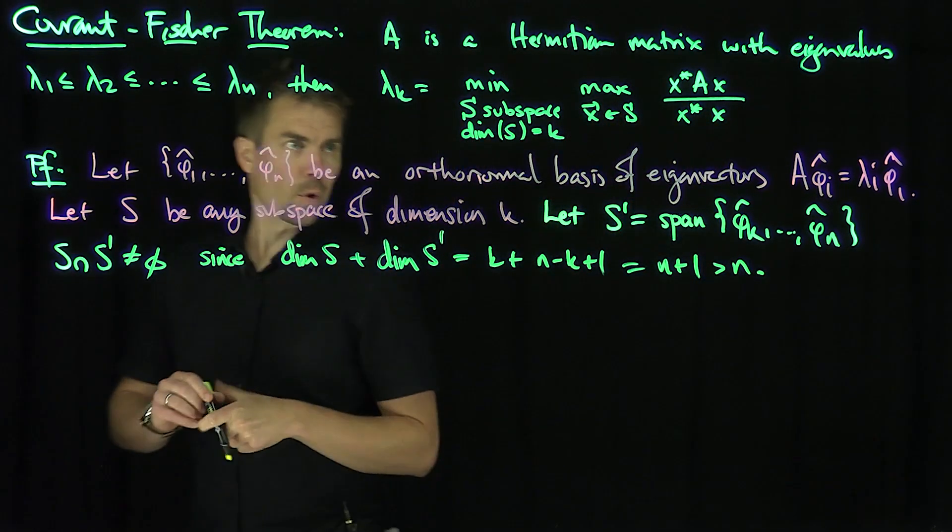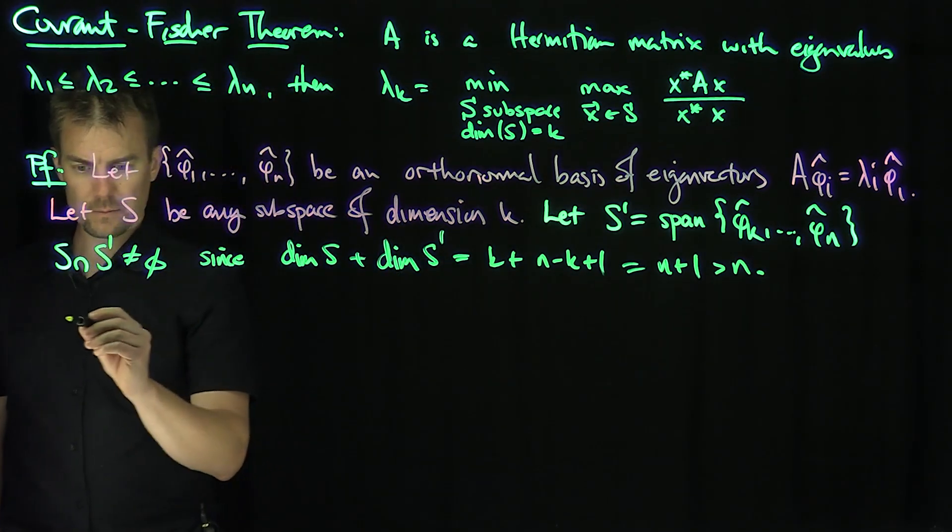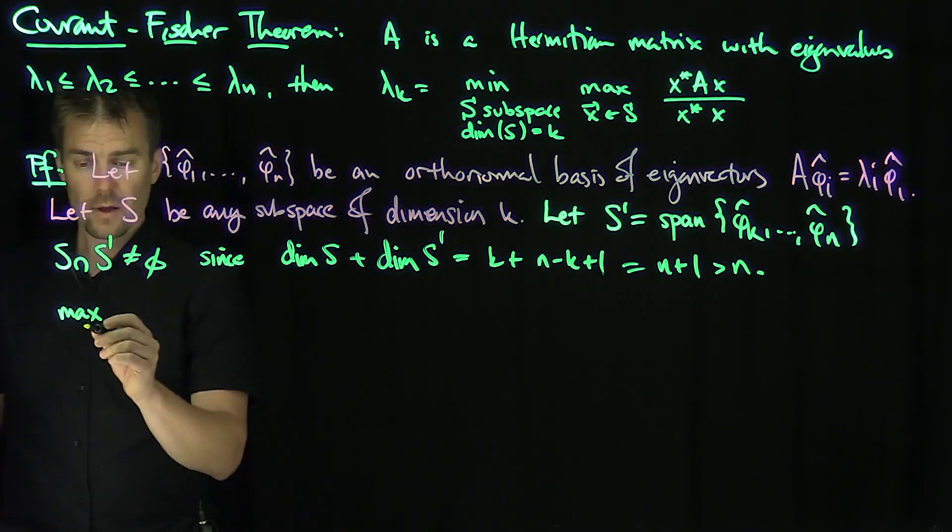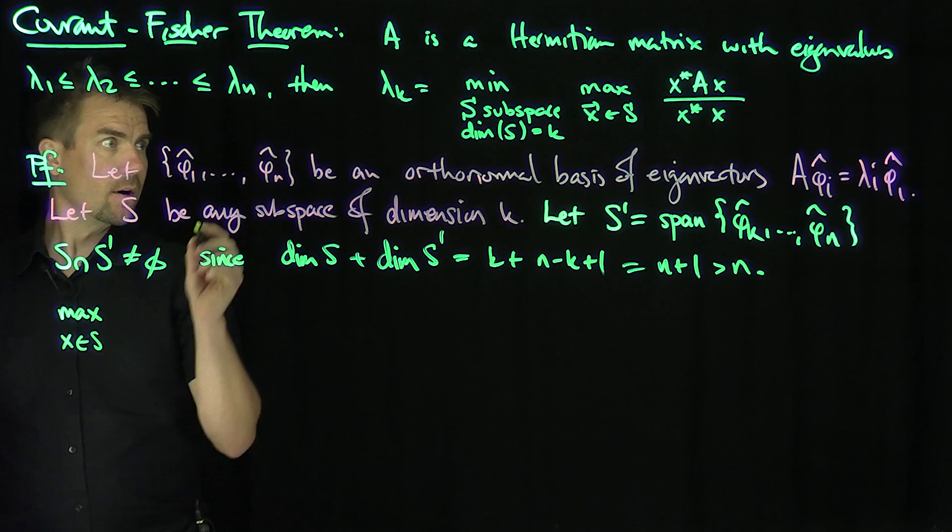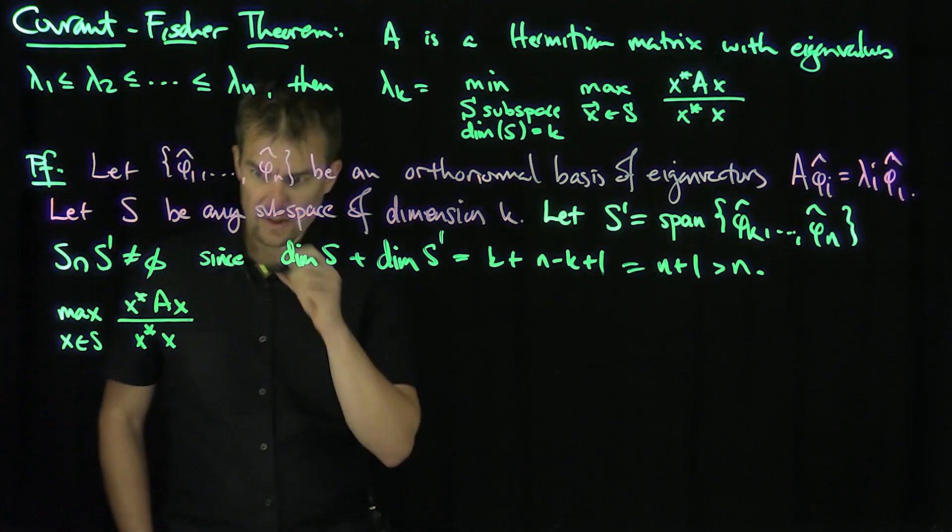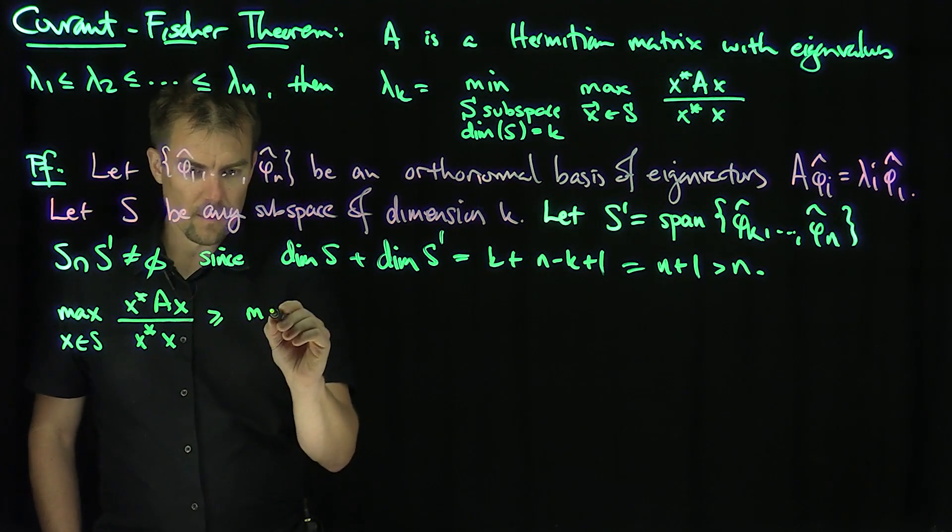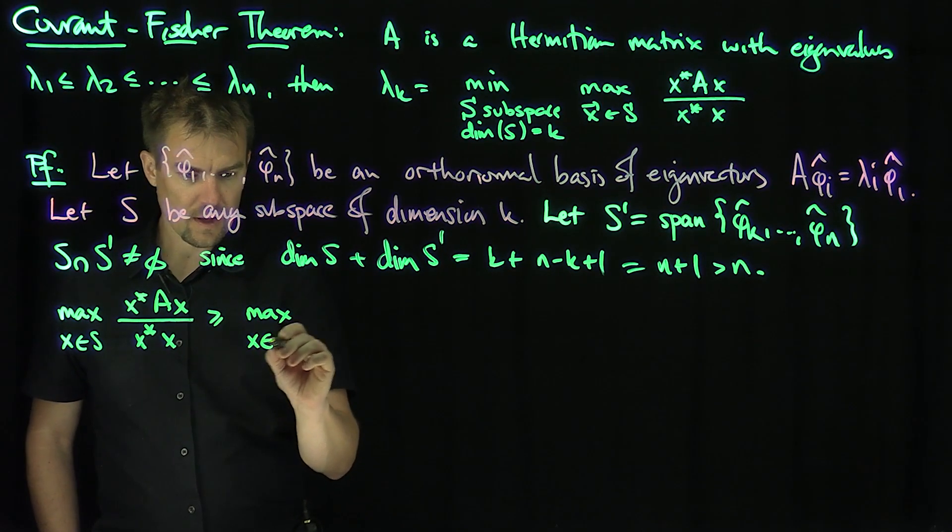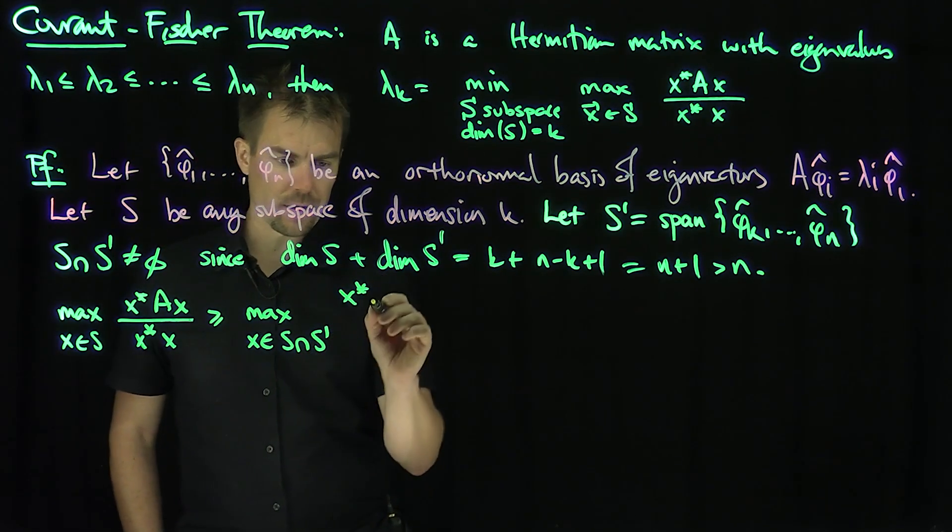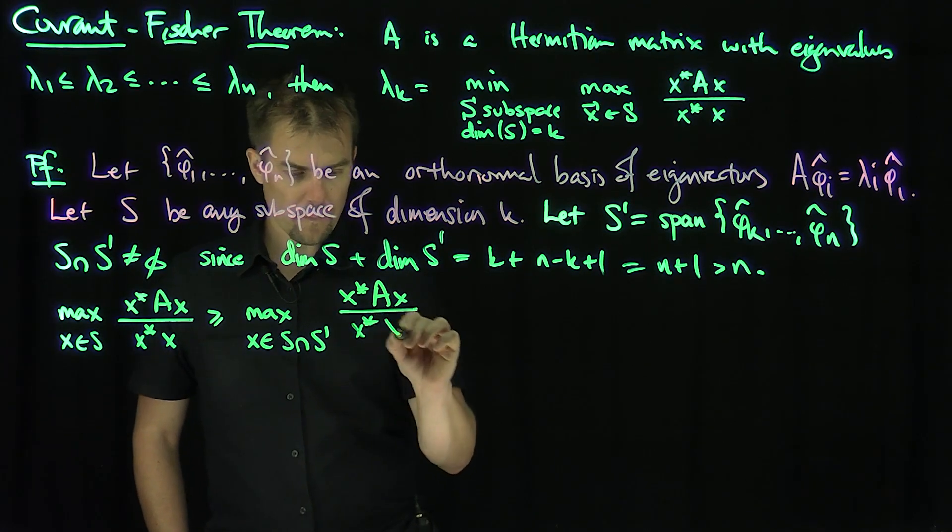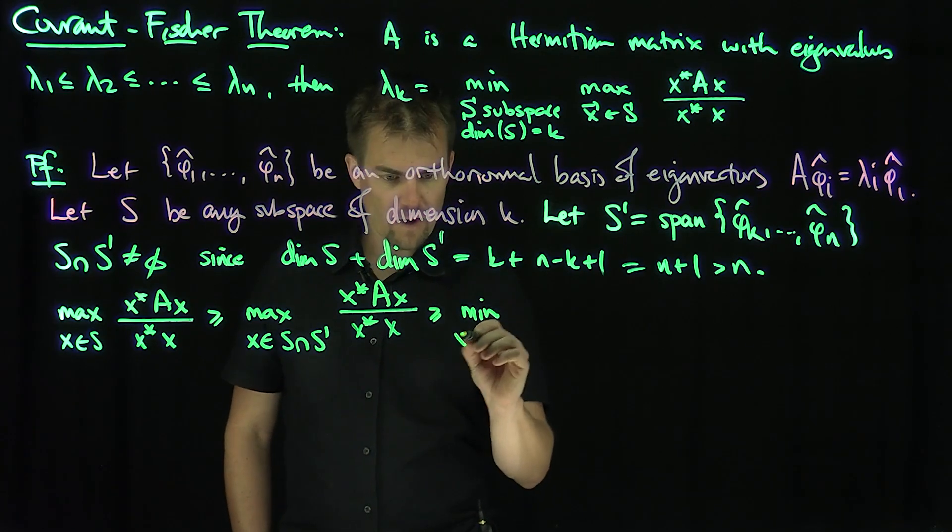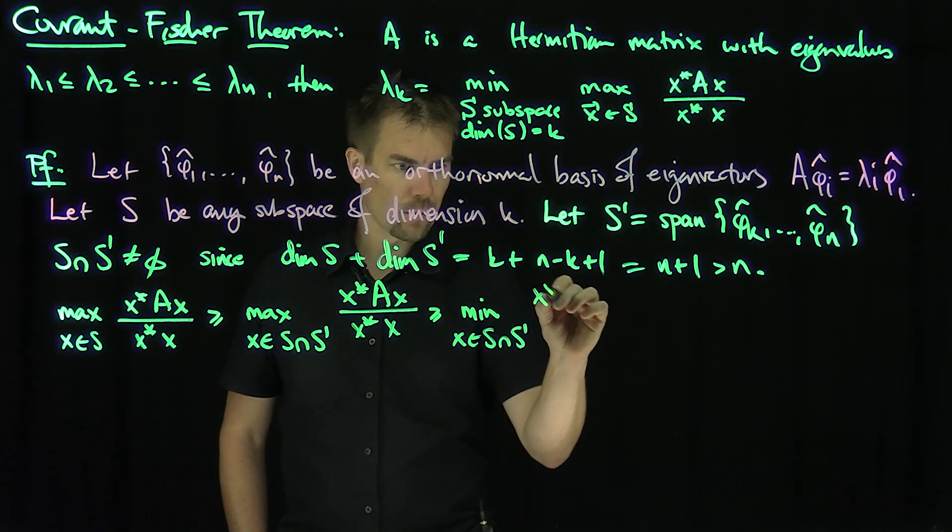And so now, what can we say? We can say the max, and technically I should be using supremum, but the maximum is attained. The max of x in S of this Rayleigh quotient x*Ax over x*x is ≥ the max over x in S ∩ S' of this thing. That's trivial because this is a smaller thing you're doing the maximum over. And the max is bigger than the min. This is ≥ the minimum of x in S ∩ S' of this Rayleigh quotient.